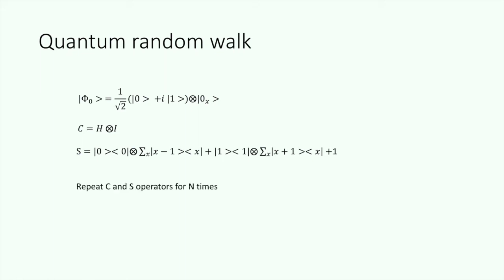Now let's look at the full progress. We start from a product state. These states describe both the spin and position. We first apply the Hadamard coin flip operator. And then we apply the S operator. Here in this S operator, if the spin state is 0, the atom will move left by 1. And if the spin state is 1, the atom moves right by 1. And then we just repeat C and S operators for N times to get the random walk.